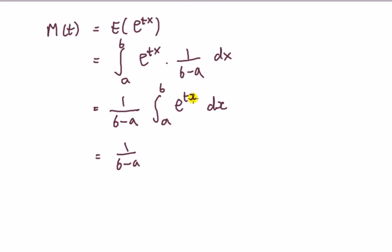OK, 1 over B minus A, and this is a straightforward integral of this guy here. As a quick revision, remember that one would integrate something of the form A to the x dx.